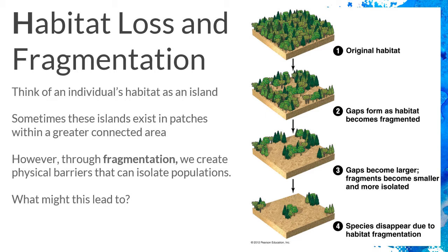Habitat loss and fragmentation is our first driver. Think about an individual's habitat as an island they live on — a large connected habitat like a large expanse of forest in Canada is like a continent-sized island. Those islands can be large and connected, or they can be little patches with either short or long distances between them. Sometimes islands exist in patches within a greater connected area, with channels for species to move through or stay connected.